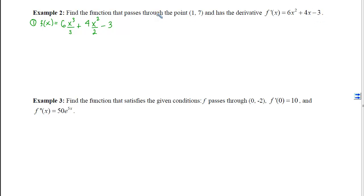And then this is a constant, so the antiderivative of a constant is just -3x plus that arbitrary constant c. My next step is to plug in the point. Well, I know that f(x) is 7 when I plug a 1 in.